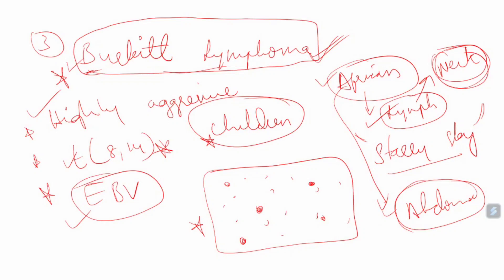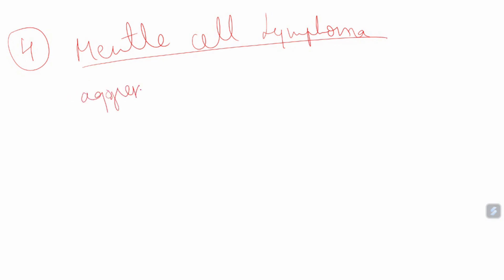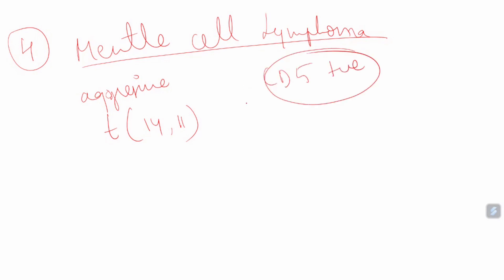The fourth type is Mantle Cell Lymphoma. These are aggressive and caused by translocation of chromosome 14 to chromosome 11. They are mainly characterized by the presence of CD5-positive cells. Mantle cell lymphomas are very rarely seen — not commonly occurring.